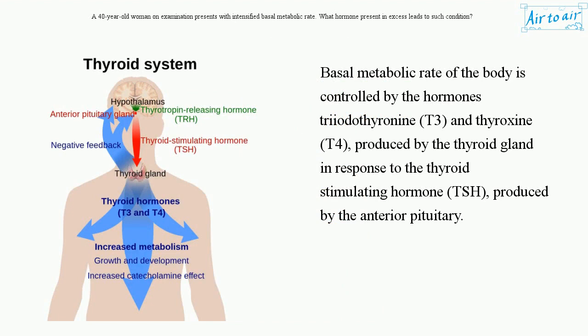Basal metabolic rate of the body is controlled by the hormones triiodothyronine, T3, and thyroxine, T4, produced by the thyroid gland in response to the thyroid-stimulating hormone, TSH, produced by the anterior pituitary.